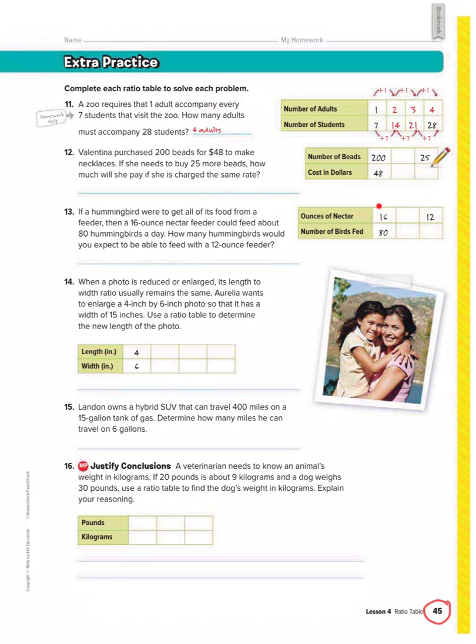So we know that 16 ounces feeds 80 birds. We want to know how many birds can we feed with 12 ounces. So can we go from 16 to 12 using multiplication or division? We can't. We'll get a decimal. So what we have to do is first simplify 16 over 80. So we're going to simplify that first ratio and put it in the middle column. So when you fully simplify 16 over 80, you get 1/5.